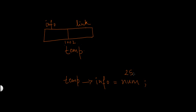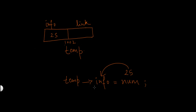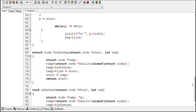Suppose the value of num is 25, entered by the user, and the address of the new node is 1002. So temp stores 1002. Then temp->info means the info part of this node, and 25 will be assigned to it — so 25 will go into the info part of the new node. The arrow operator is a combination of a hyphen and greater-than symbol, and it is used to access members of a structure using a pointer. Info and link are members of the structure, and temp is a pointer.